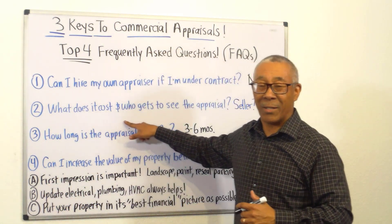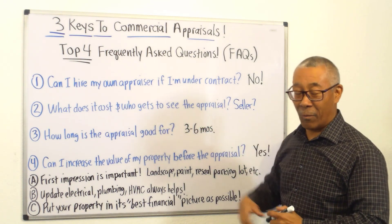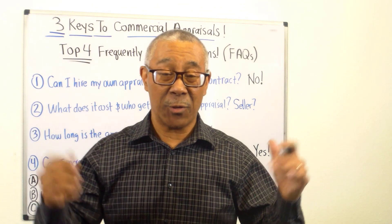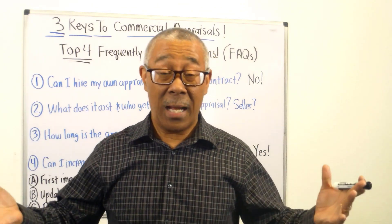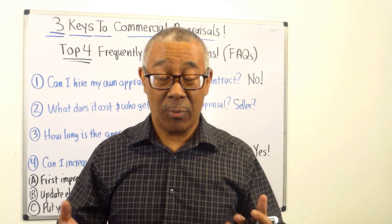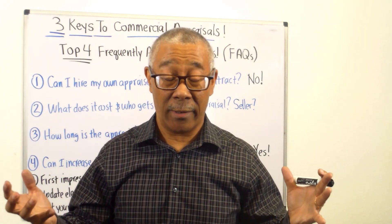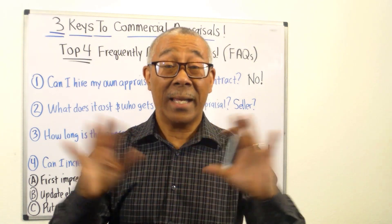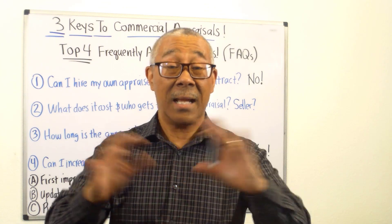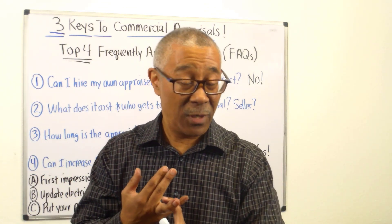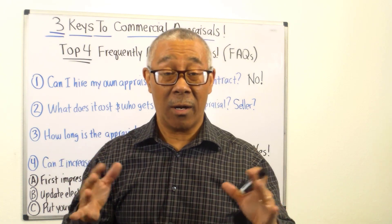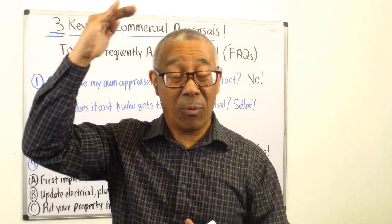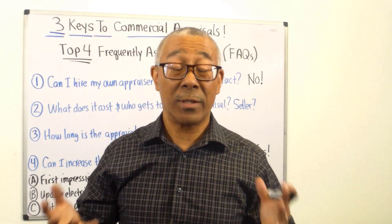Number two: what does it cost, and who gets a copy of the appraisal? For a really small commercial property, about $500; for an average-sized commercial property, between $2,000 and $5,000. It costs a lot more than a residential appraisal, but there's a lot more information. The lender gets a copy and you get a copy. Anyone outside of that needs your permission — it's not public. Does the seller get a copy? No, especially if you're negotiating and you have a good deal. You don't want to show the seller it appraised for $1.3 million when you're buying for $1.2 million.